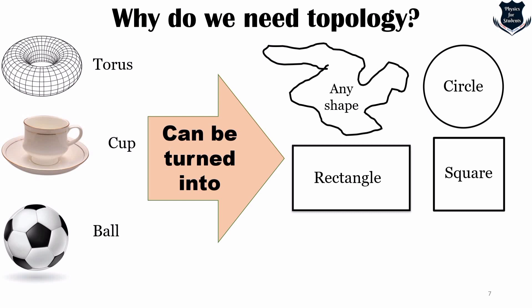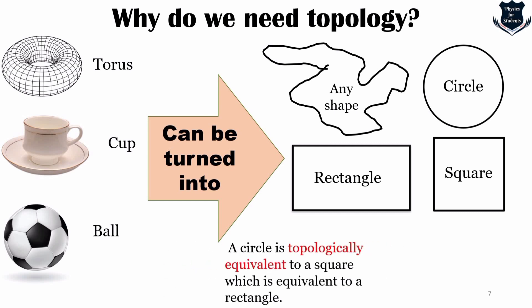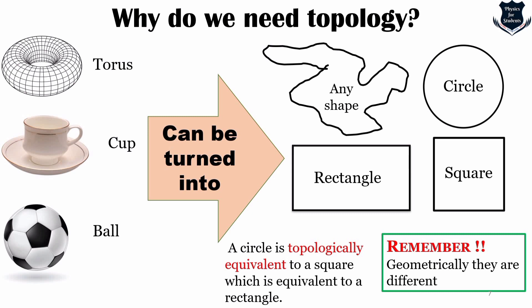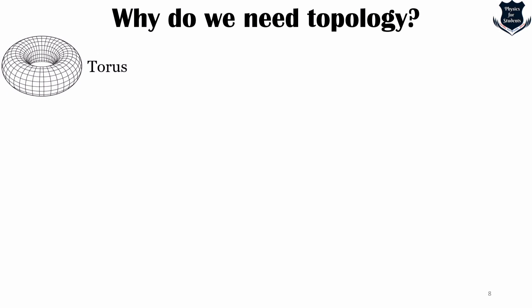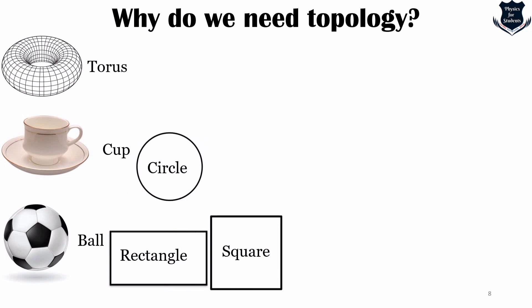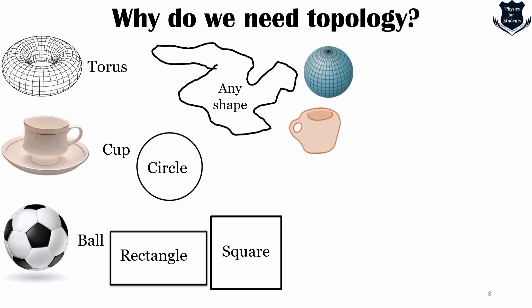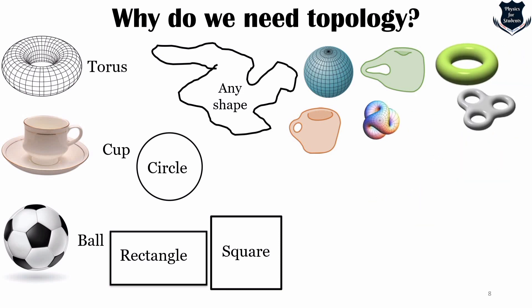Topological equivalence doesn't mean that geometrically they have to be equivalent — they are geometrically different but topologically equivalent. This torus, this cup, and this ball, when they turn into a circle, rectangle, square, or are generalized into any kind of a shape, take the form of a cup, a sphere, and a torus, or a torus with three holes which is called genus three.